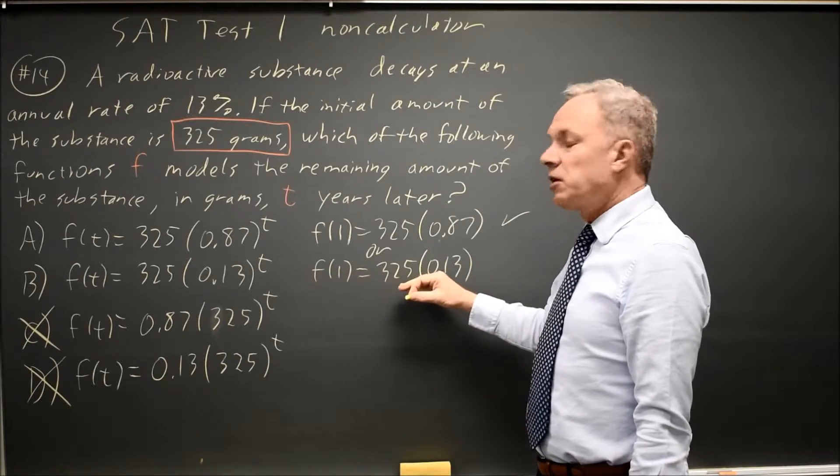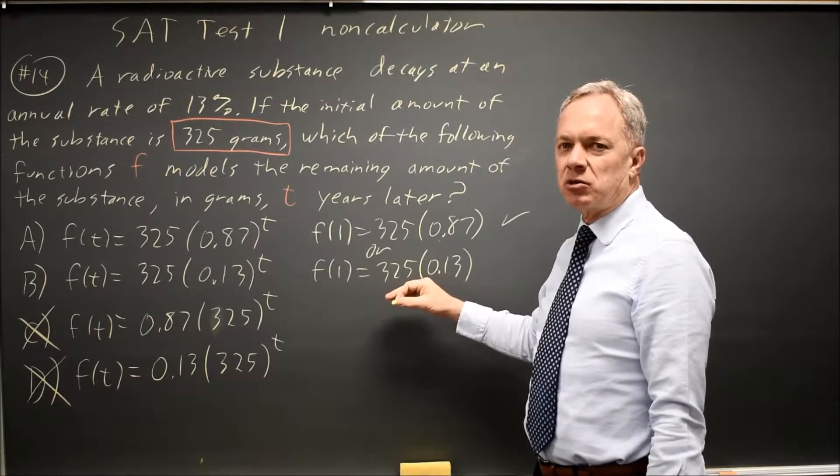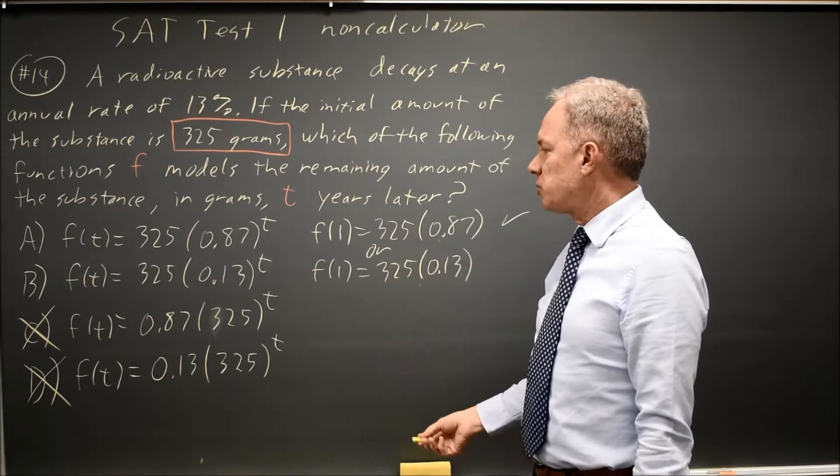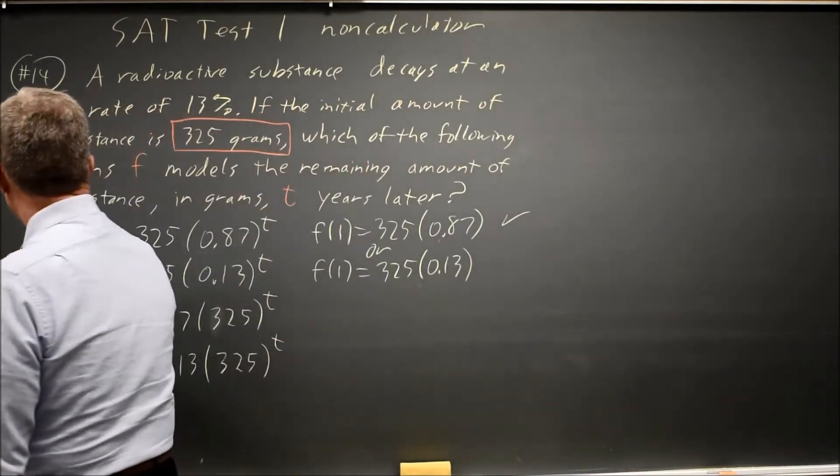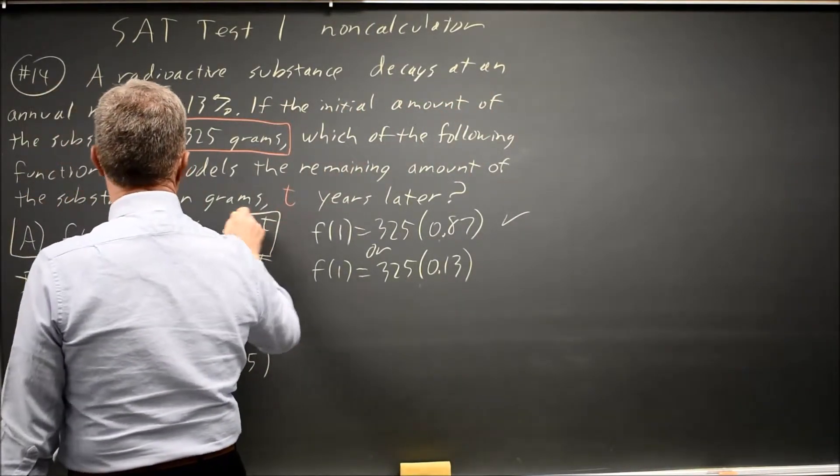In choice B, we only have 13% left after one year, so we're decaying at a rate of 87% per year, so choice B is wrong because it doesn't match at one year. The correct answer is A.